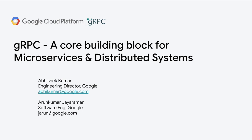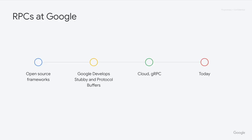RPCs were originated as an idea back in the early 1980s, and RPC systems have been built and distributed in open-source ever since that period. At Google, in the very early startup days, the systems were built using open-source frameworks. But in the very early days, some of the early engineers at Google — folks like Jeff Dean and Sanjay Ghemawat and a bunch of other big names — developed an RPC system called Stubby, and they developed protocol buffers. Over time, these became the foundation for all sorts of distributed systems built at Google.